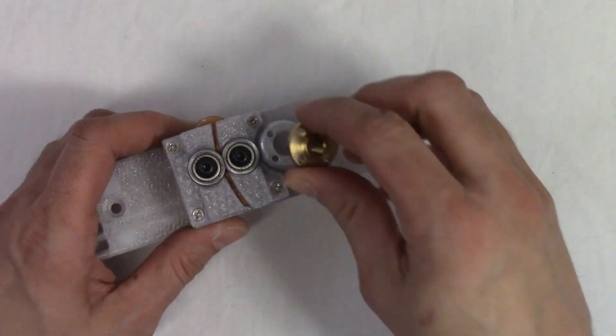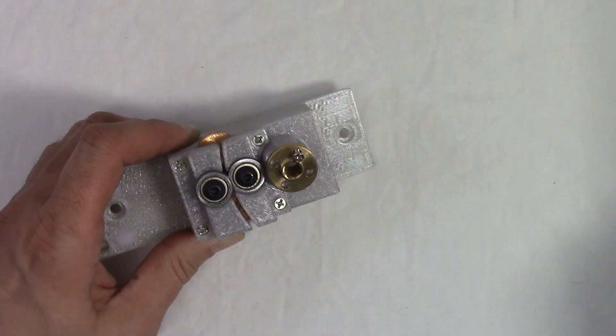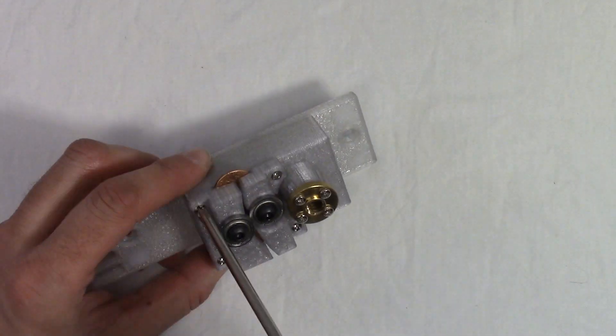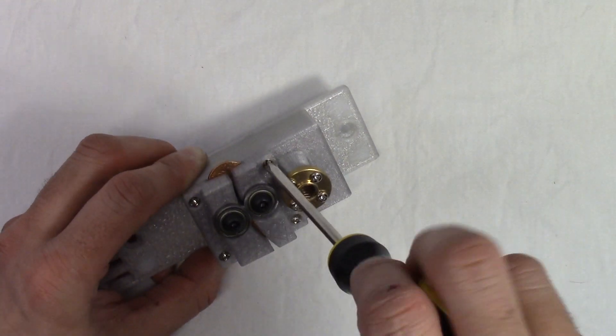Connect the lead screw nut to the middle part with the four M3 by 12 screws for the lead screw nut. Make sure all screws are fully tightened into place.